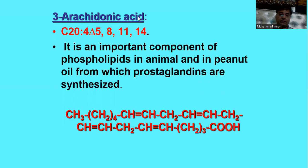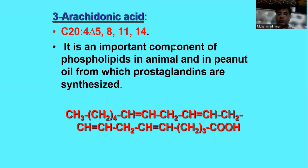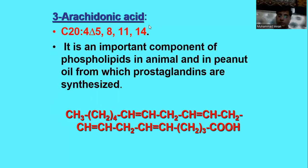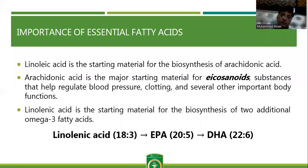Arachidonic acid is an omega-6 fatty acid: 20 minus 14 equals 6. It is an important component of phospholipids in animals and peanut oil, from which prostaglandins and leukotrienes are synthesized. It has 4 double bonds at positions 5, 8, 11, and 14.